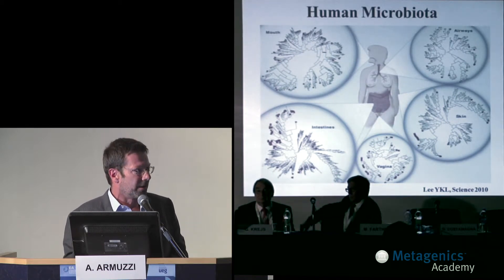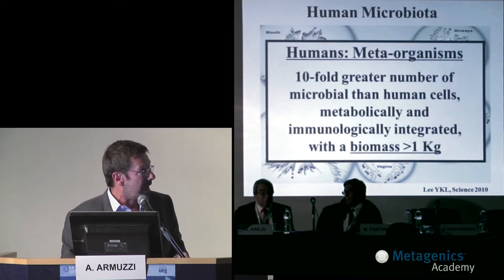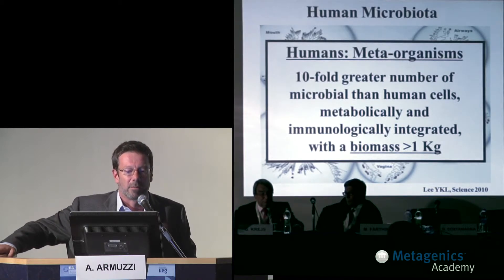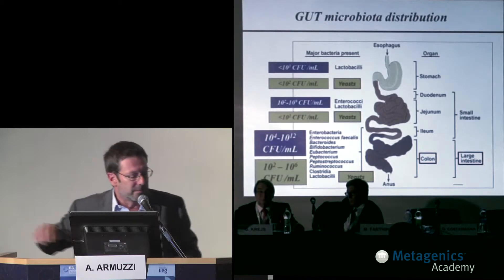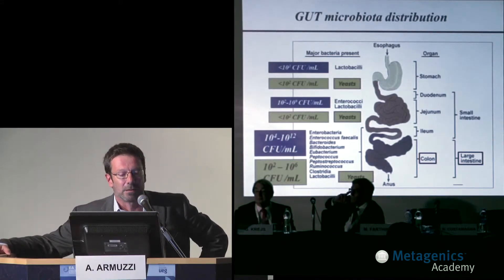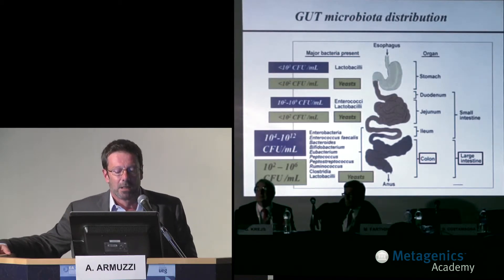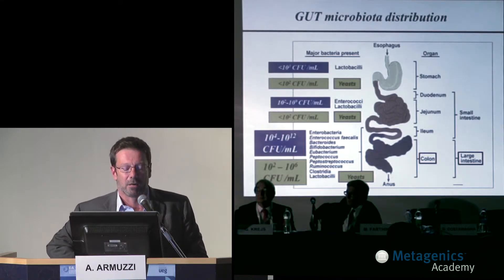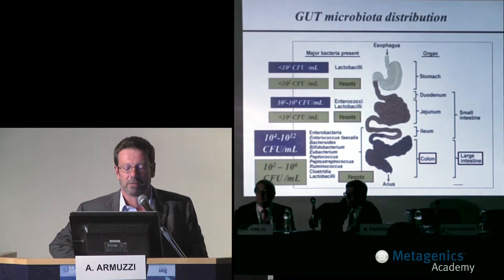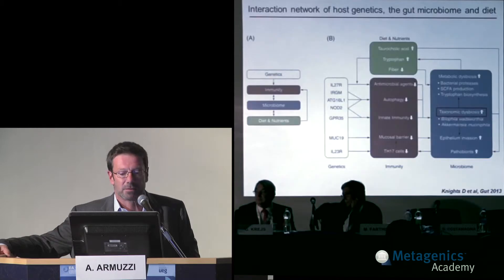The human microbiota is not only in the intestine, but also in the mouth, vagina, skin, and elsewhere. There are a tenfold greater number of microbial cells than human cells, weighing approximately more than one kilogram, making it a meta-organ in our body. The distribution of bacteria starting from the inner layer differs across the gastrointestinal tract, with the colon being the largest reservoir of microbes — 10² to 10⁶ colony-forming units per milliliter of yeast and 10⁴ to 10¹² colony-forming units of bacteria — with different bacterial films that may change according to health or disease conditions.